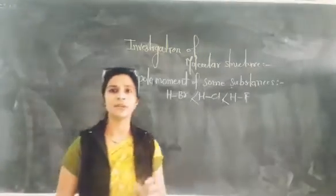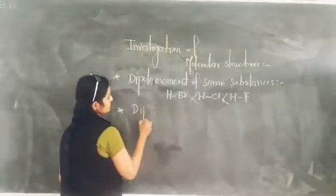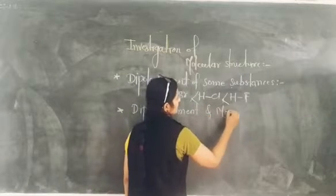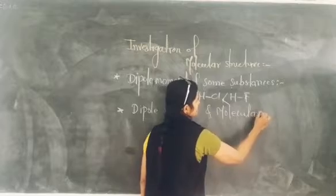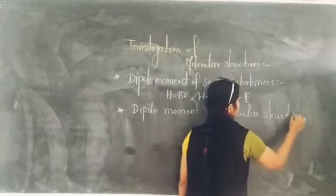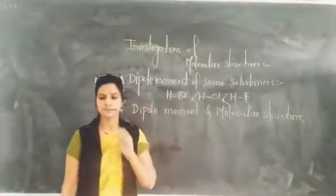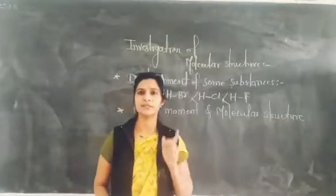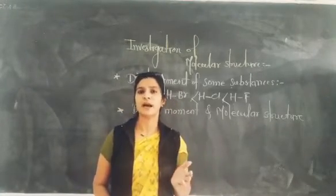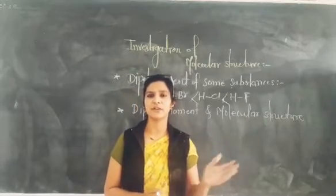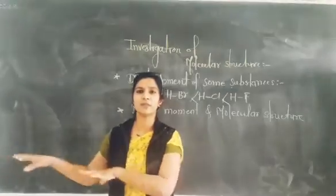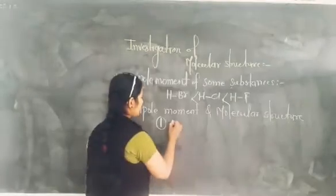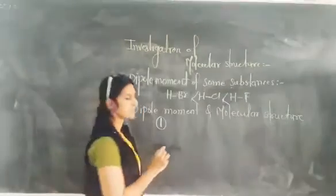Then let's find dipole moment and molecular structure. In this we want to cover the final point. This point is very, very important — it will be asked in your examination, for example, to define the term with a proper example. The first point is dipole moment and molecular structure, that is the percentage of ionic character.